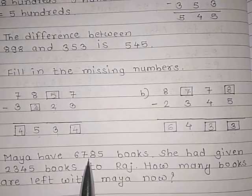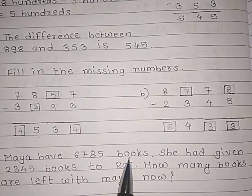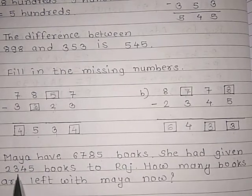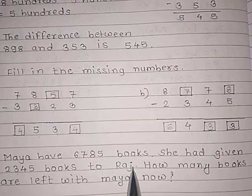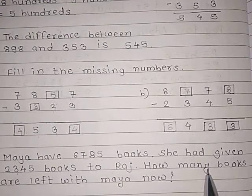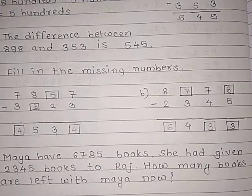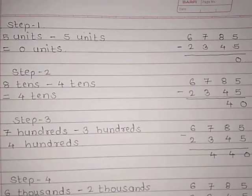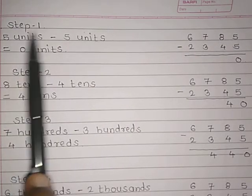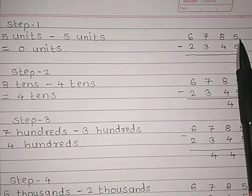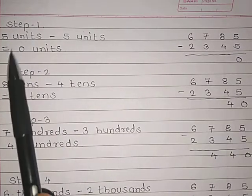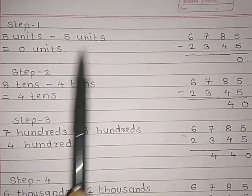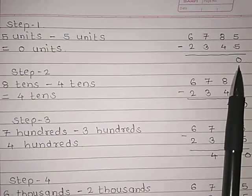Next word problem: Maya has 6785 books. She gave 2345 books to Raj. So how many books are left with Maya? Here we have to subtract 2345 from 6785. Step 1: In the unit place we have 5 and 5. So 5 units minus 5 units equals 0 units, so the answer is 0 here.